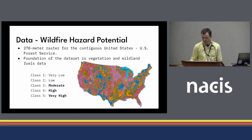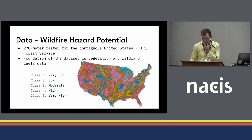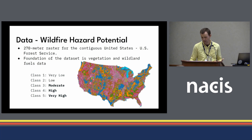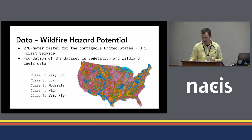Wildfire hazard potential was a small-scale raster data set at 270 meters per pixel from the U.S. Forest Service. It was developed from vegetation and wildland fuel models and intended to be used in concert with spatial data depicting highly valued resources — communities, infrastructure, etc. It consists of five classes, from very low to very high wildfire hazard potential.